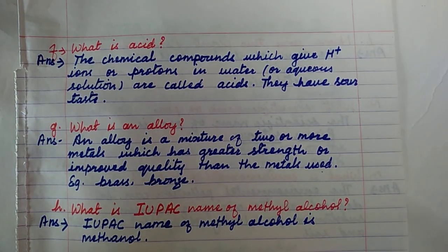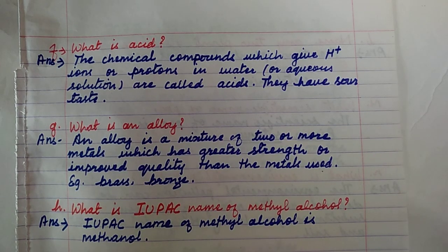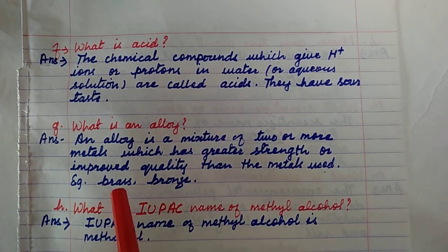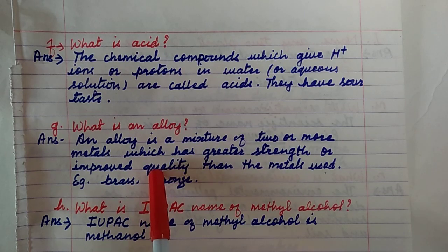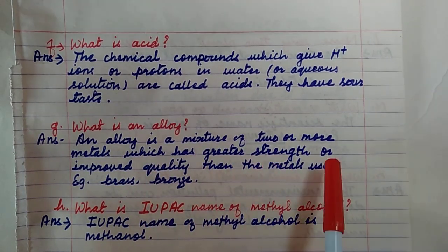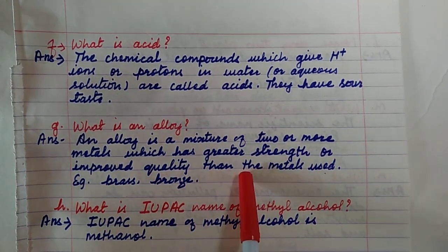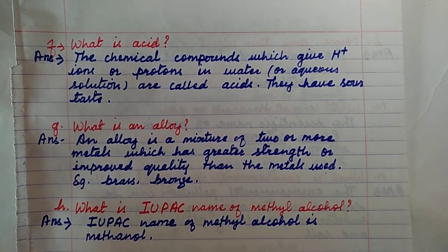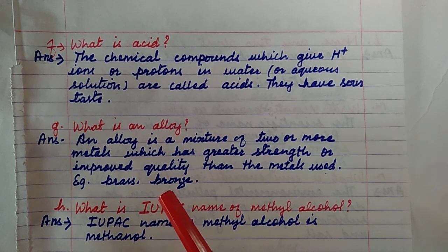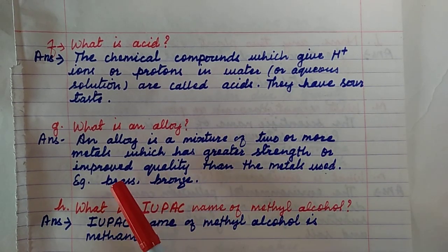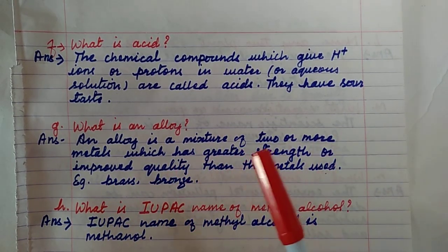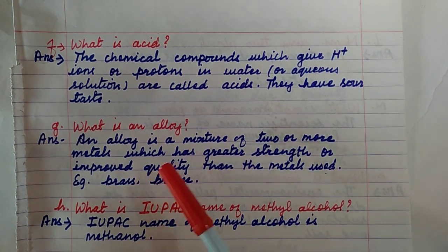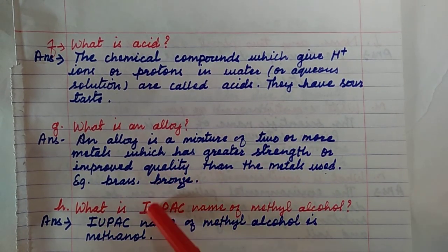Question number 1G: What is an alloy? An alloy is a mixture of two or more metals which has greater strength or improved quality than the individual metals used. Alloys are made to increase strength, improve shining, and improve quality. Examples of alloys include brass and bronze.